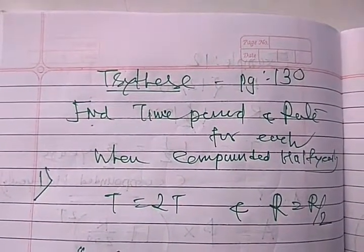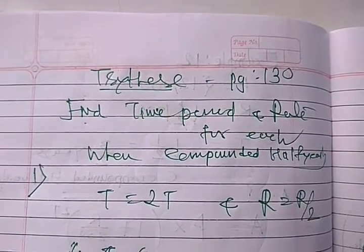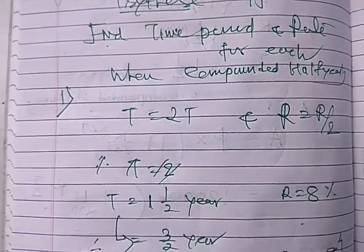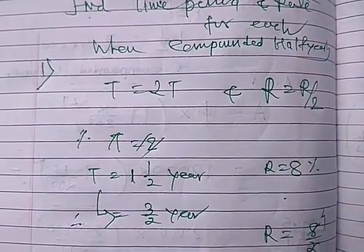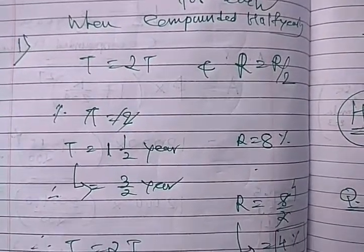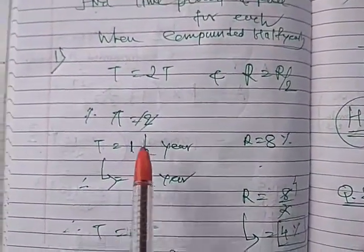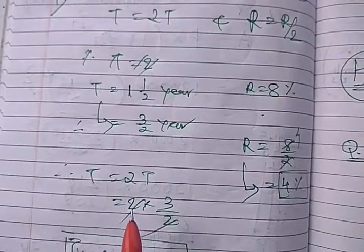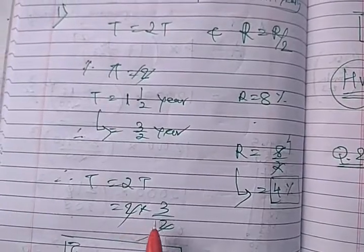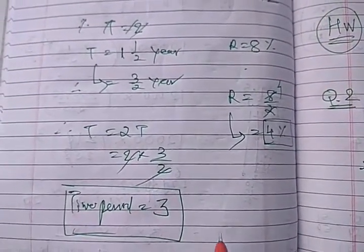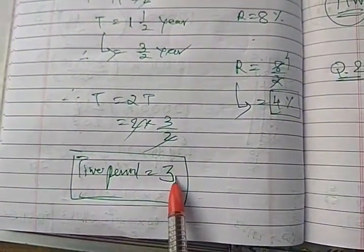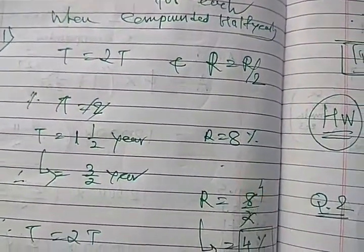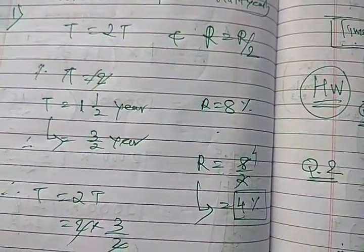Page number 130 students, try this. Find the time period and rate for each. Here you have to find out the time period or rate. I told you when it is compound and half yearly, T equal to 2T and R equal to R upon 2. So in first sum, T equal to 1 and 1 upon 2 year. So convert to simple fraction, you will get 2 into 3 upon 2, 2 cancel. You will get time period equal to 3. And here R equal to R upon 2, so 8% is there. So in first one 8 upon 2, 4%.